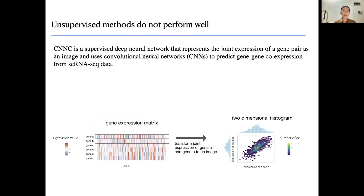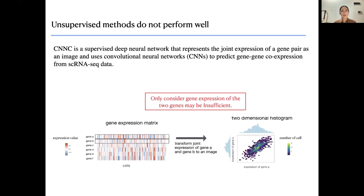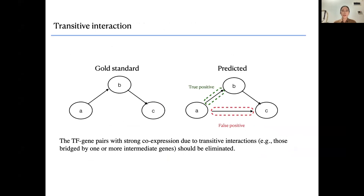Previous work proposed a supervised deep neural network called CLNC, which represents the joint expression of gene pairs as an image and uses convolutional neural networks to predict co-expression from single-cell RNA-seq data. For example, if we want to know the interaction between gene A and B, we can transform the expression of these two genes into a two-dimensional histogram, which can be regarded as an image, and use it as input to predict the interaction.